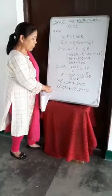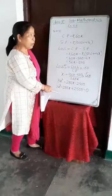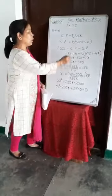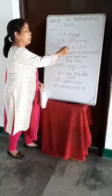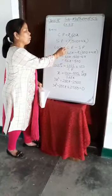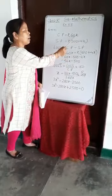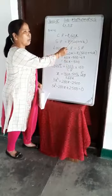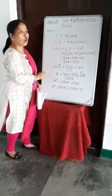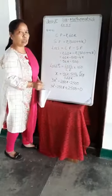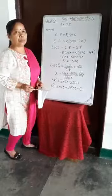Whatever value of X comes, put that value in. Then multiply 60 by the value of X to get the cost price of the sari.